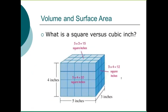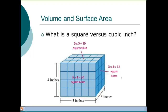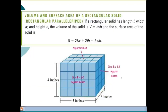Volume describes how many cubes it would take to fill up a shape. For this particular box, we've got four inches high by five inches wide by three inches deep. Multiplying four times five times three gives our total number of cubes inside the shape. On one face there are 20 squares, on another face there are 12 squares. Surface area is a different thing from volume — volume counts how many cubes are on the inside.